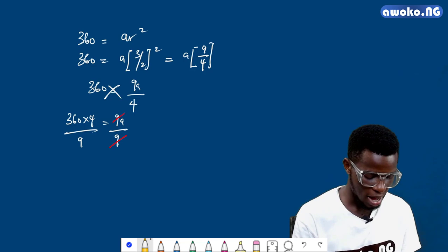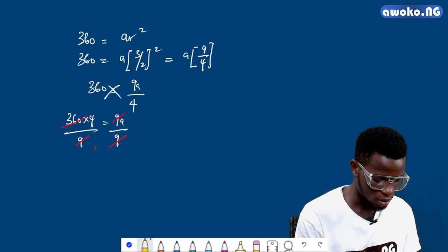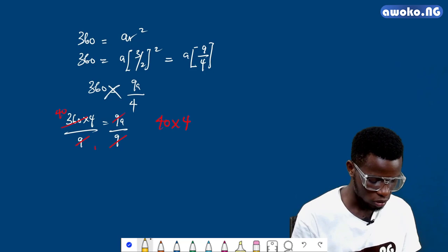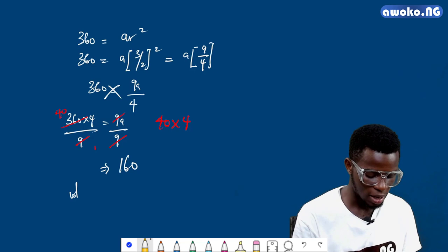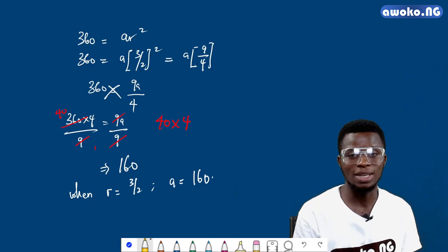Then 360 times 4 over 9—9 goes here 40 times. So we are left with 40 times 4, which equals 160. When r equals 3/2, our a equals 160. That is how to apply our knowledge of geometric progression whenever we have a case where it leads us to equations.